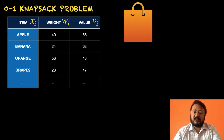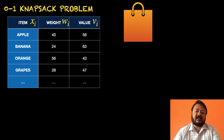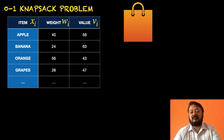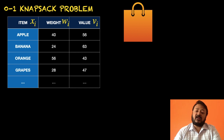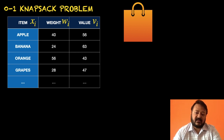The knapsack problem is a very simple problem. Suppose you have gone to a supermarket to buy some stuff for your home — here we have taken the example of fruits. There are many different varieties of fruits available, each with a certain weight and a certain value. Here, value does not mean monetary value but how much importance that particular item holds for you. For example, banana has a value of 63 and orange has a value of 43, meaning banana is more important to you than orange.